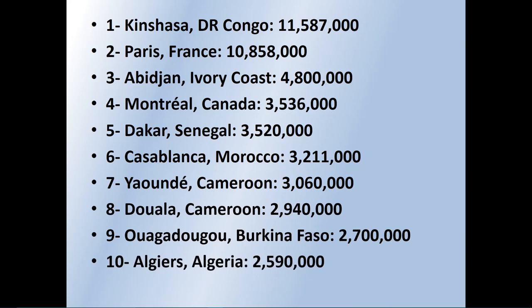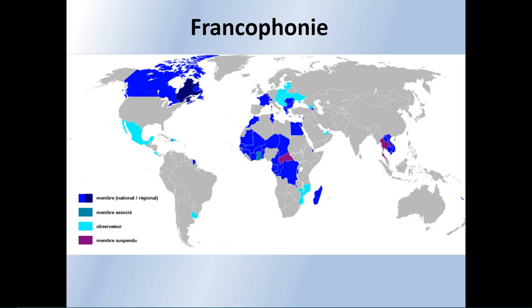The top 10 French-speaking cities in the world are mostly in Africa. The Francophonie world includes Canada, Quebec, France, Romania, and most of Africa — which surprises many people. Even in Asia, Vietnam speaks French. This map shows all the nations that speak French, have French as a first language, or are part of the Francophonie membership.